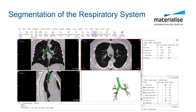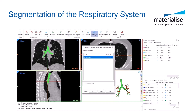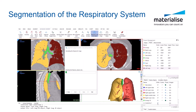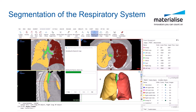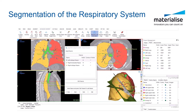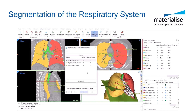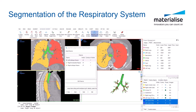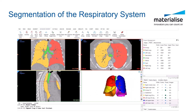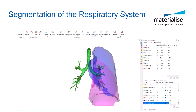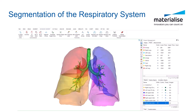And finally, segment the left and right lungs automatically and auto-detect the fissures to create the lung lobes automatically. This will help to create a beautiful segmentation of the respiratory system.